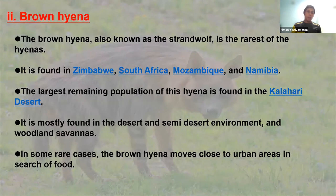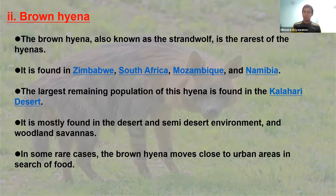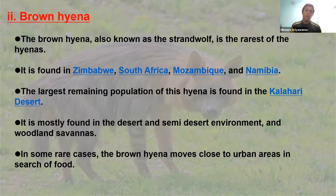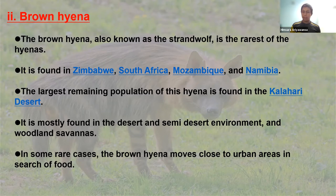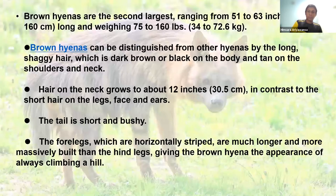The brown hyena is also known as the strand wolf and is the rarest of the hyenas. It is found in Zimbabwe, South Africa, Mozambique, and Namibia — all countries on the African continent. The largest remaining population is found in the Kalahari Desert. It is mostly found in desert and semi-desert environments and woodland savannas. In some rare cases, brown hyenas move close to urban areas in search of food.